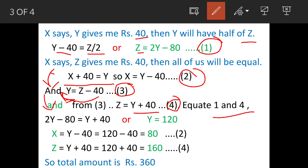Now equate 1 and 4, because here it is Z and here also we have Z. Fortunately we have got the value of Z at both places in terms of Y, so we equate them.